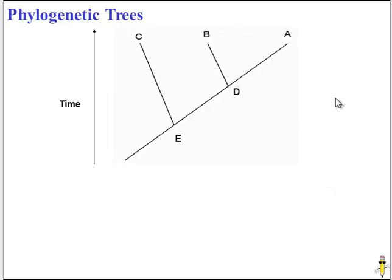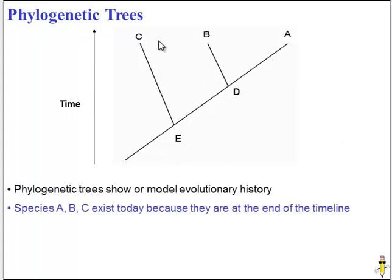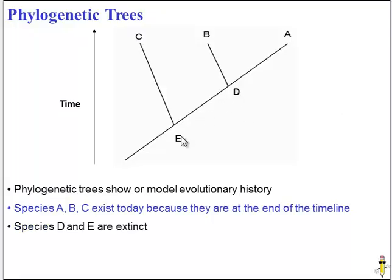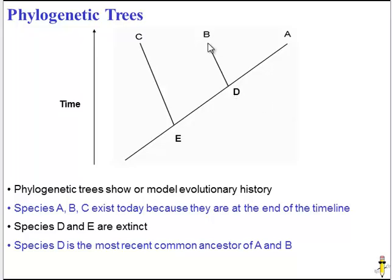We do that by making a diagram called a phylogenetic tree. And to interpret a tree, there are a few key principles to keep in mind. First of all, species located at the end of the tree, at the end of the timeline, exist today. Sometimes that timeline will be shown; sometimes you have to infer it. Species that are not at the end are extinct. When two species can be traced back to a common point, that is the common ancestor.